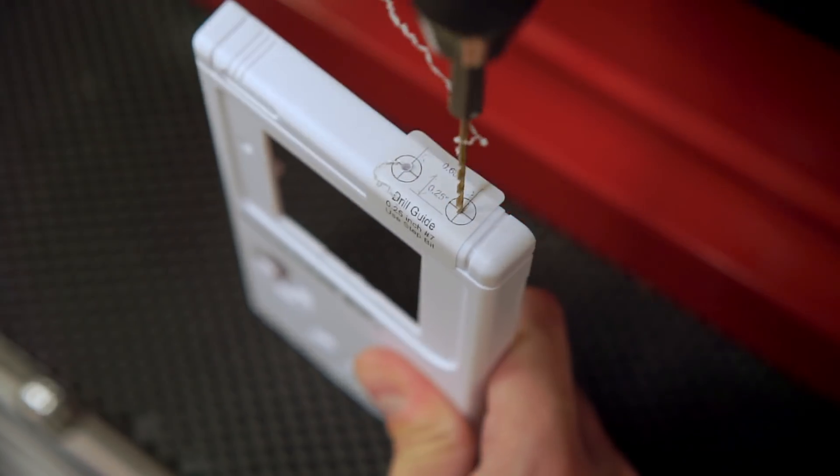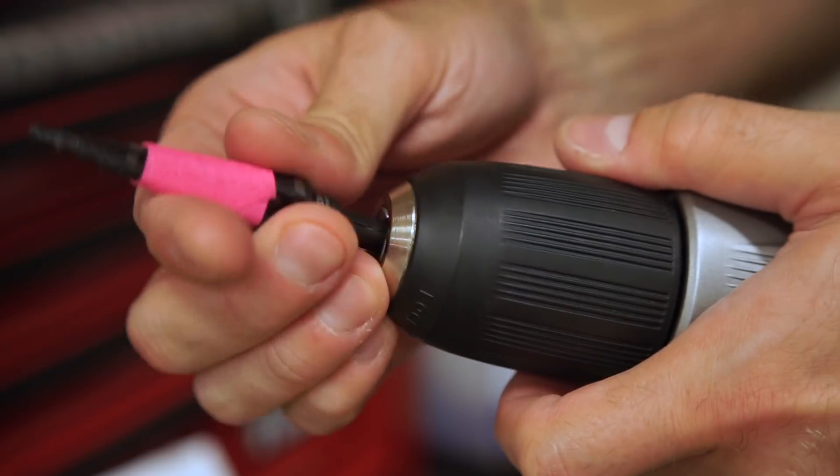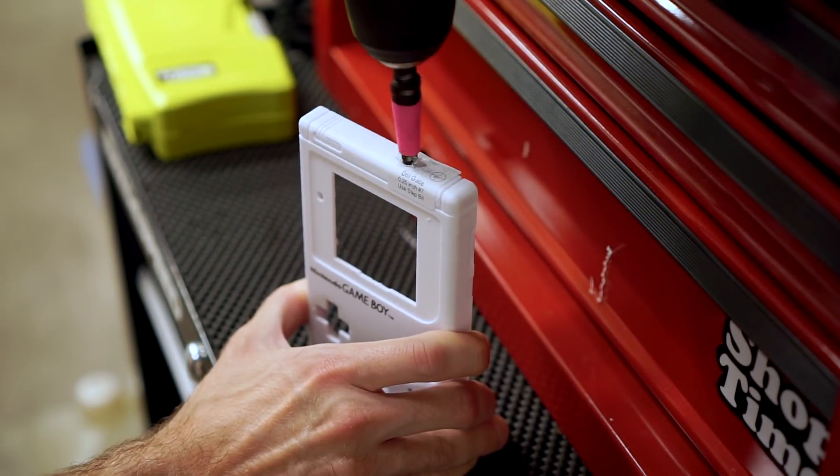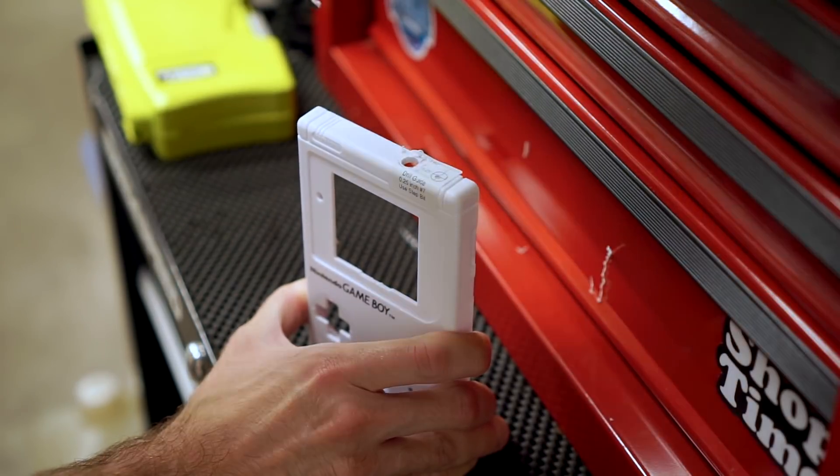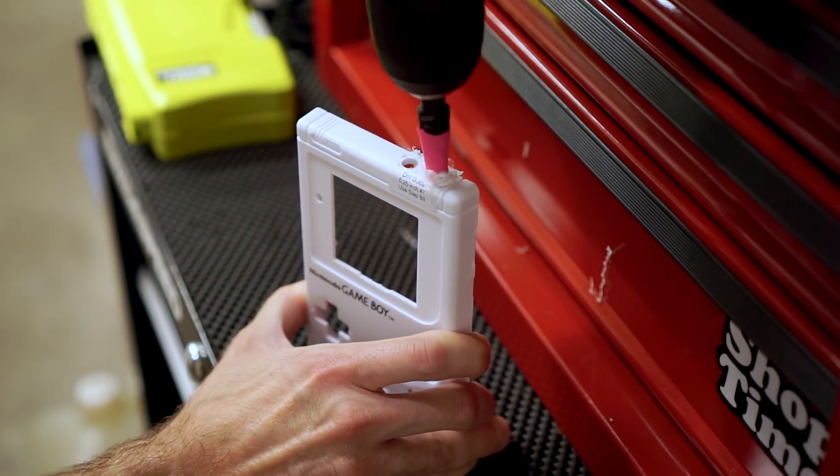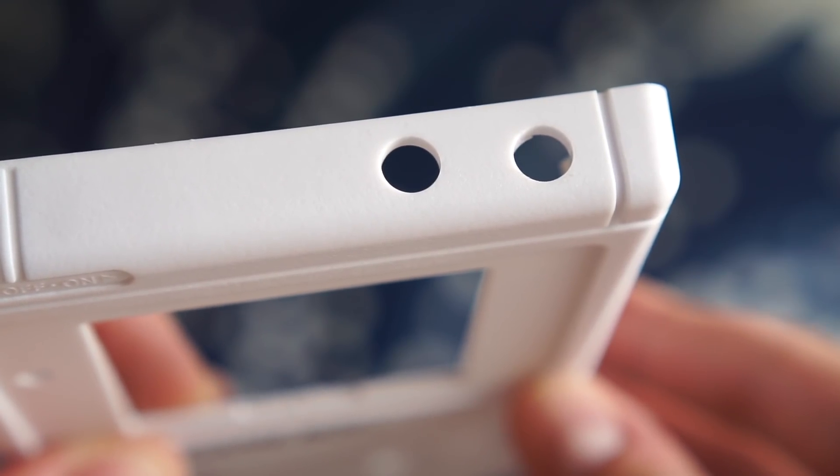I used a sixteenth-inch bit to drill a couple of pilot holes, then chucked up the step bit. It made quick work of the front panel's plastic, but didn't snag or tear it out in the process. One of these holes will be visible when the mod is complete, so getting a clean finish can be important.